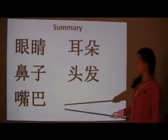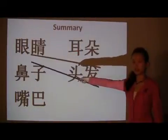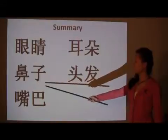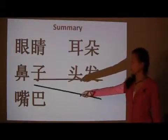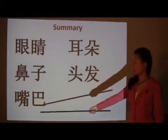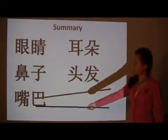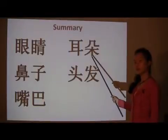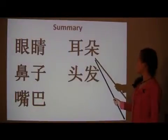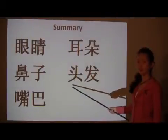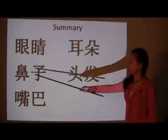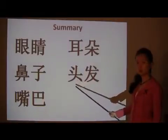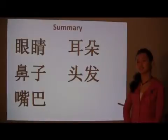And then, let's summarize. Eyes: 眼睛. 眼睛. For eyes. 鼻子 — nose. 鼻子. Mouth: 嘴巴. 嘴巴. Ear: 耳朵. Your hair: 头发. 眼睛, 鼻子, 嘴巴, 耳朵, 头发. And those are the things on your face. Thank you!